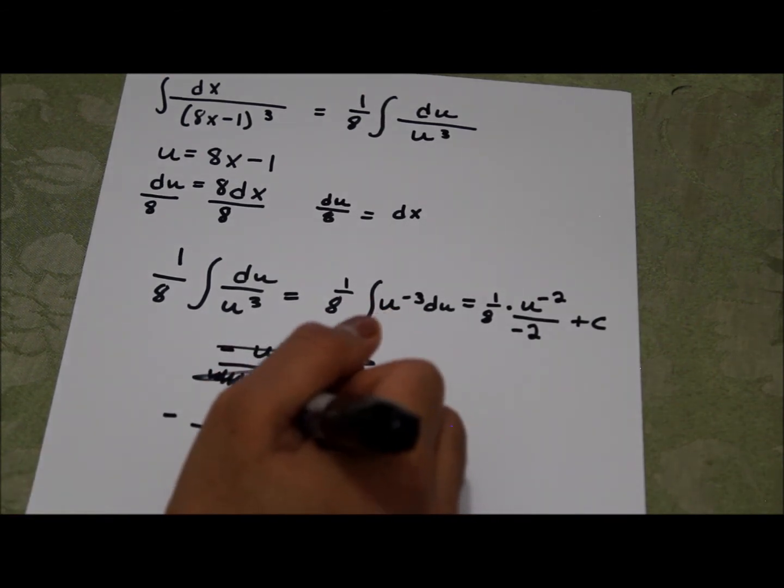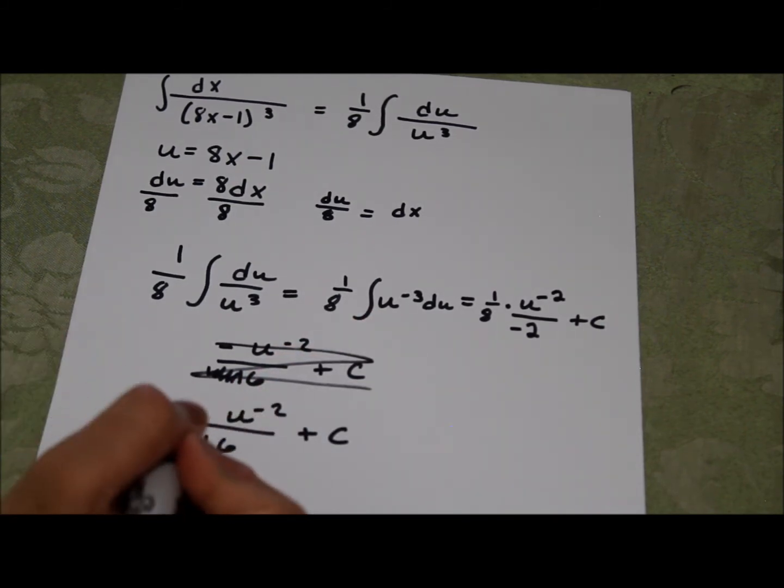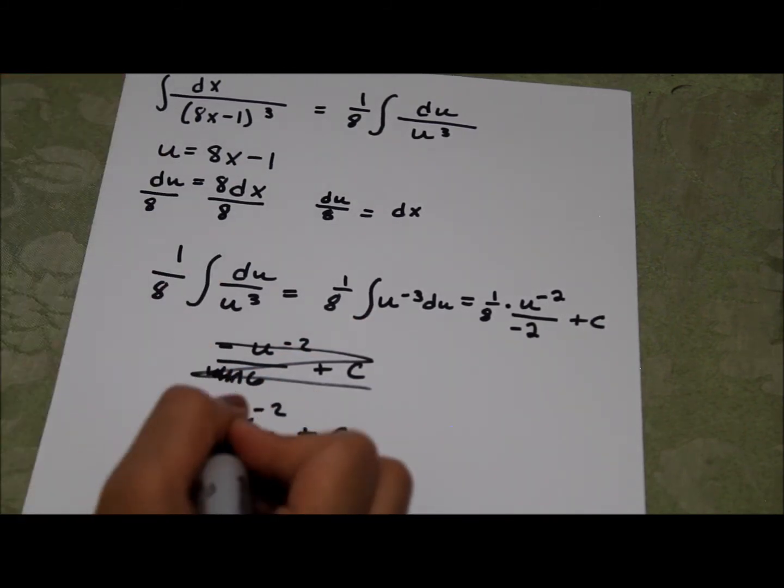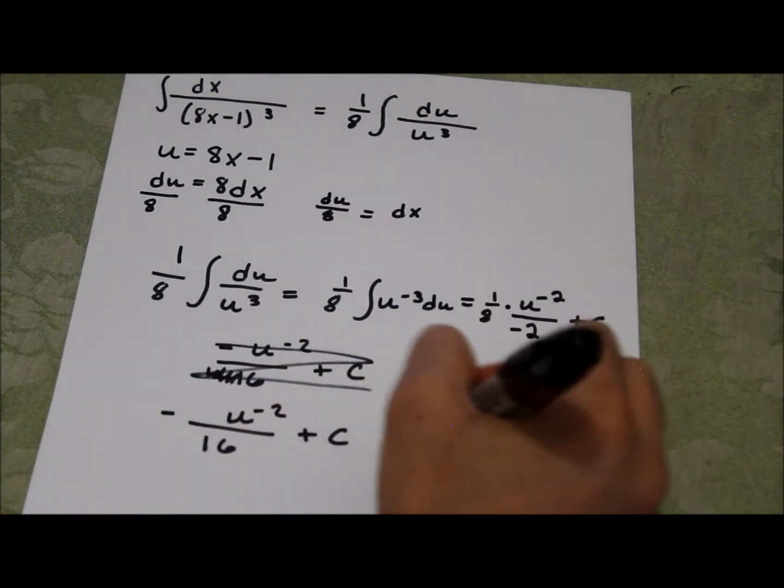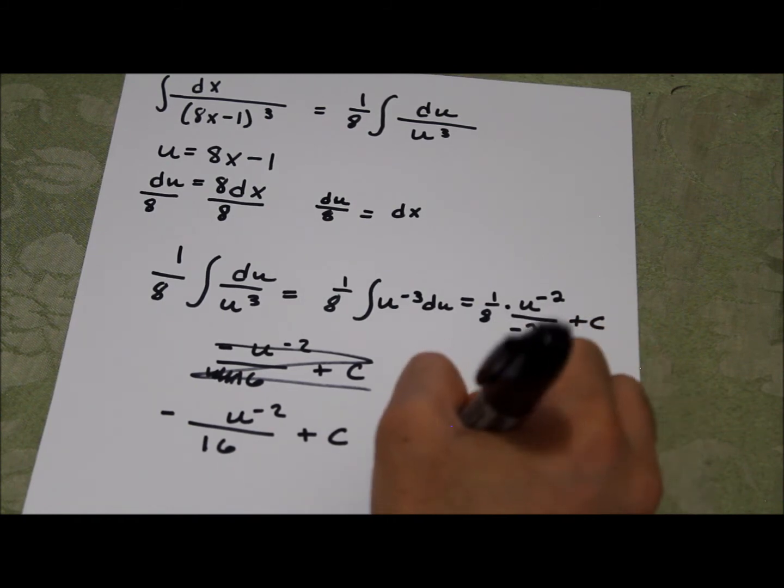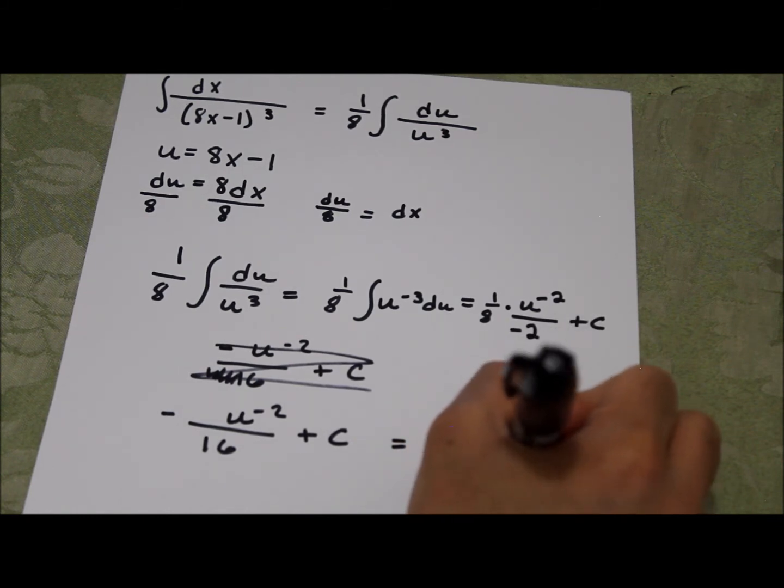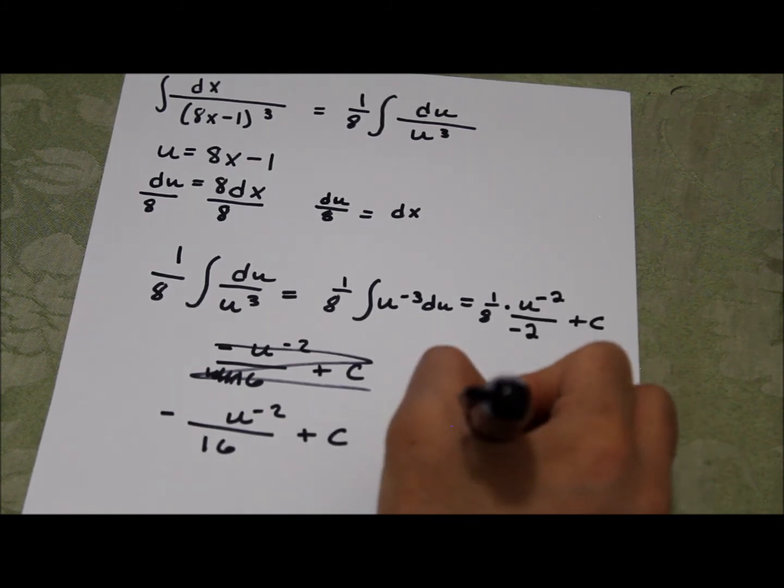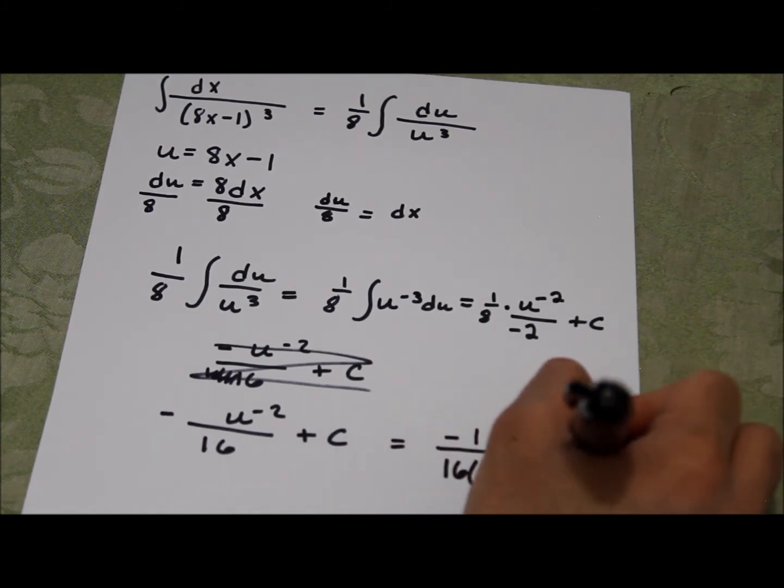First of all, we don't like to have negative exponents. And second, we have to replace the u with 8x minus 1 because that's what we substituted u for. So this would equal 16 times 8x minus 1 squared over negative 1 plus c.